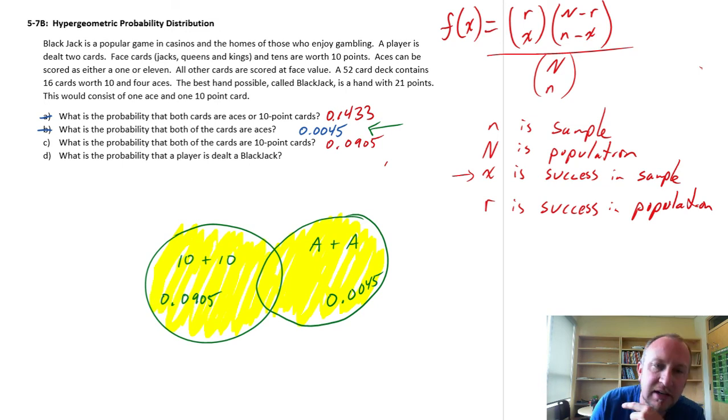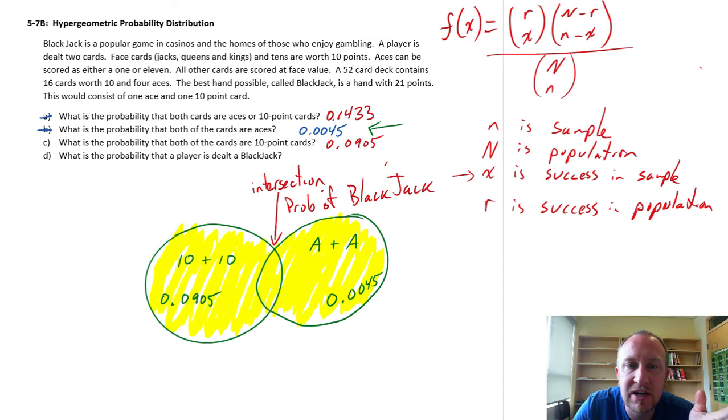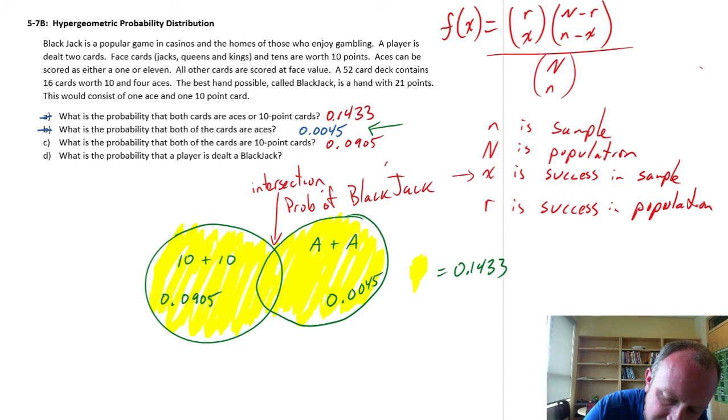So what we want to calculate now for part D, is using this information, we want to figure out, well, what is that intersection then? If we can calculate the probability of the intersection, that's my probability of a blackjack. One ace and one ten. So we have all of the information necessary. We have in part A, the union of these two events. So let me just label my, this union, the area that I have shaded in yellow, is 0.1433.